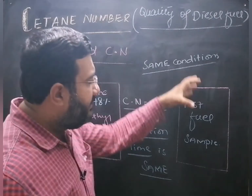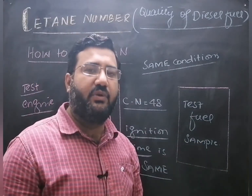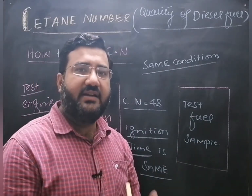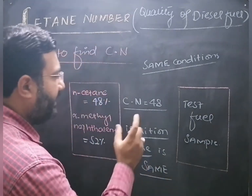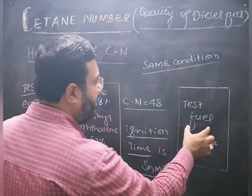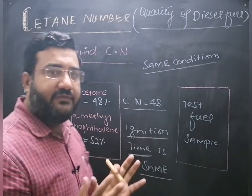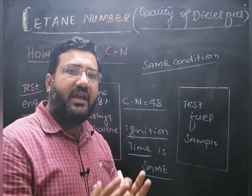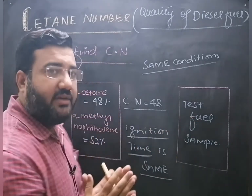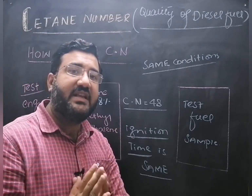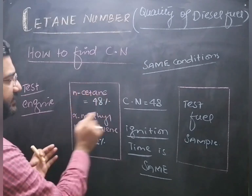In the same test engine under the same conditions, the test fuel or sample fuel is ignited and its ignition time is noted. Suppose that the ignition time of the test fuel and that of the reference fuel are the same. If the time required for ignition of the reference fuel and test fuel is the same, it means both of these will have the same cetane number.